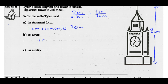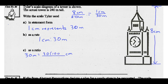As a rate: 1 centimeter to 30 meters. As a ratio, we need the same units, so convert 30 meters to centimeters. Since 1 meter equals 100 centimeters, 30 meters equals 3,000 centimeters. So the ratio is 1 centimeter to 3,000 centimeters.